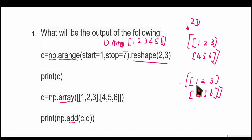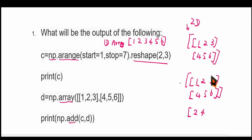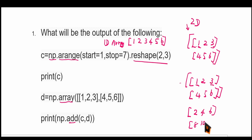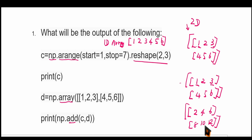That is, 1 plus 1 — this 1 and this 1 will be added, you will have 2. Then 2 plus 2 gives 4. This 3 and 3 will be added — 6. Then 4 plus 4 is 8, then 10, then 6 plus 6 gives 12. So this should be enclosed by a square bracket. The answer is 2, 4, 6, 8, 10, 12.